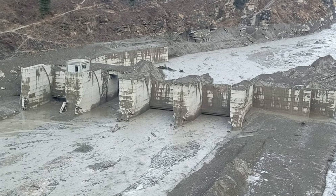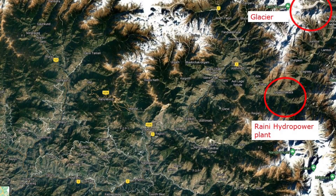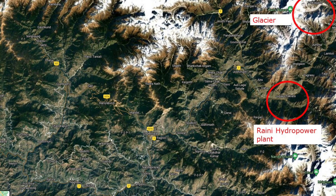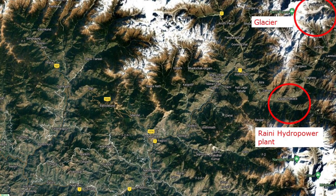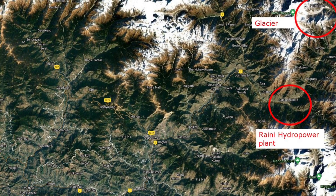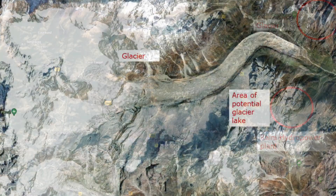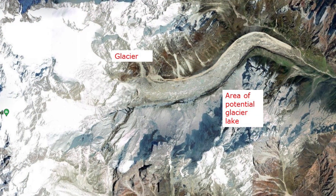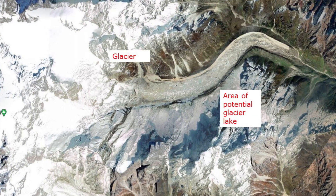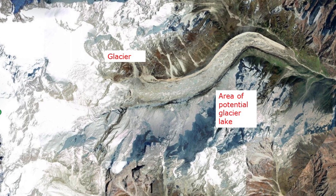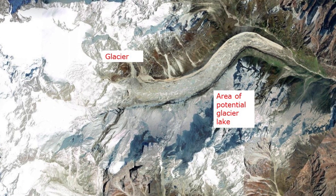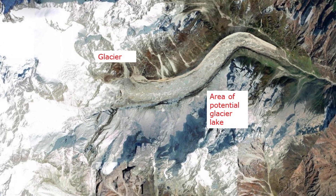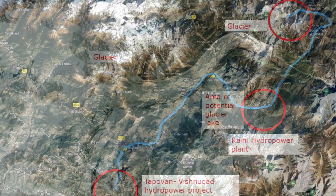First I had a look at the map over the area and I found a glacier just north of Rini Hydro power plant, which was the first power plant to be hit. On closer look at the glacier, it appears that the glacier may have been running into a lake in front. Reading the media and looking at this area, I think this could have been the area where the disaster started.